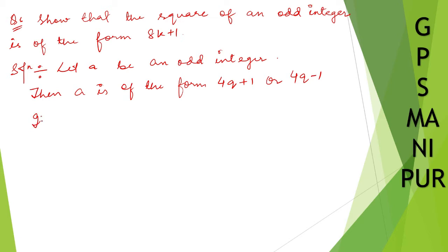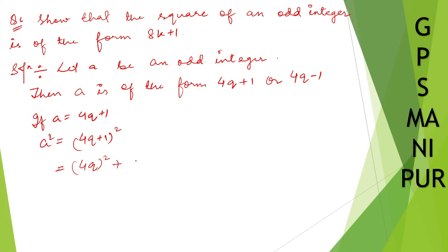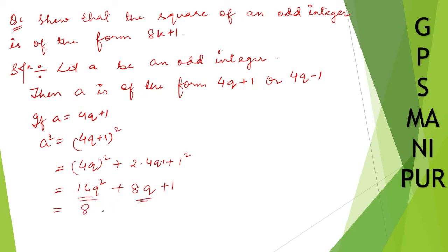If a is equal to 4q plus 1, then a squared is equal to (4q plus 1) squared, which expands to (4q) squared plus 2 times 4q times 1 plus 1 squared, giving us 16q squared plus 8q plus 1.